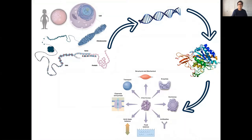An adult human body has about 50 to 100 trillion cells. And in each of those cells, there are 3.2 billion bases of four building blocks of DNA: A, G, C, and T. So these four bases make the whole of our genome — 3.2 billion of them in each cell — and we have trillions of those cells in our body.